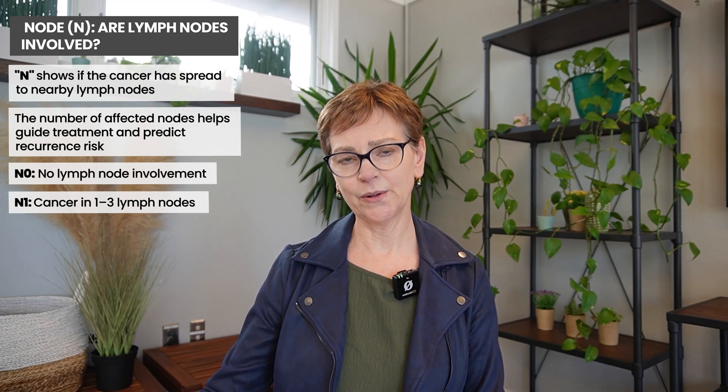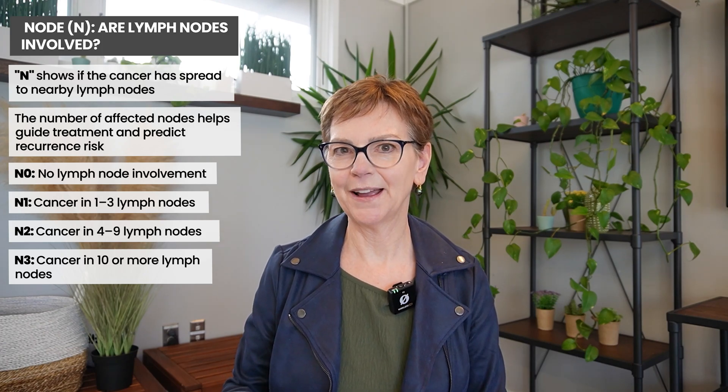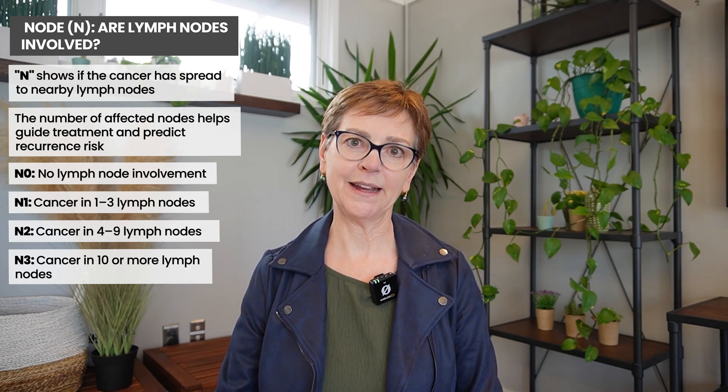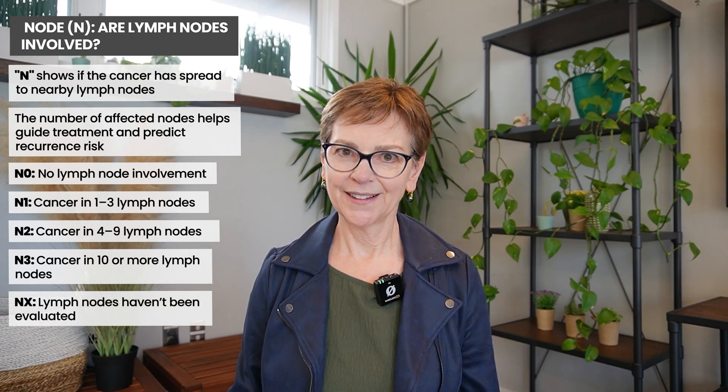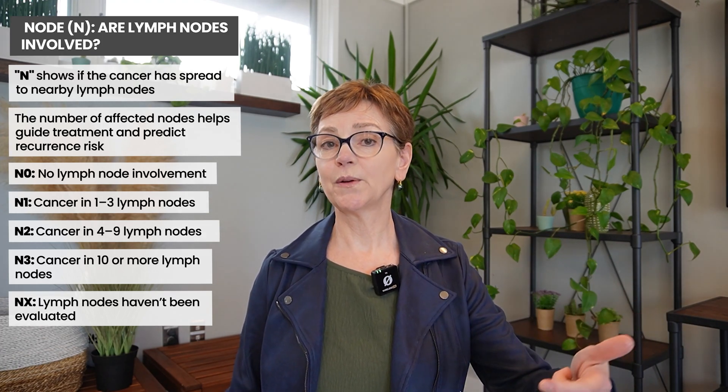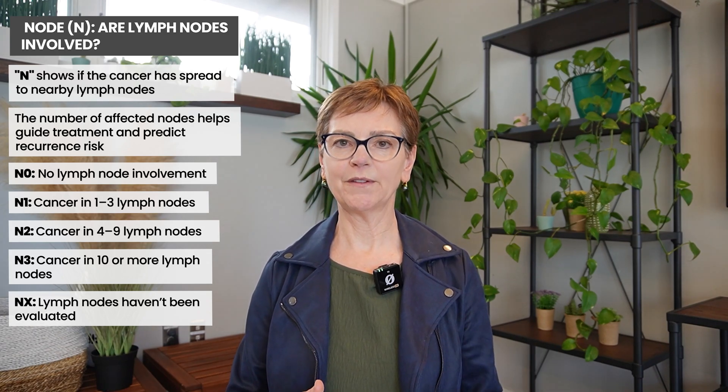N0 disease means lymph nodes were looked at and no lymph nodes were found to have cancer. N1 means one to three lymph nodes had cancer in them, regardless of how many were examined. N2 disease is four to nine positive nodes, and N3 disease is 10 or more nodes. NX means that lymph nodes haven't been examined yet — we can't say whether they're positive or negative. Assessing the lymph nodes is part of almost everybody's treatment plan, with the exception of women over 70 and people where the tumor was small with negative margins that are hormone receptor positive and treatment wouldn't be altered by the lymph node result.